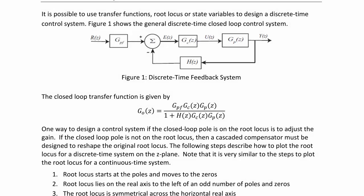It is possible to use transfer functions, root locus, or state variables to design a discrete time control system, similar to what we did for a continuous time control system. Figure 1 shows the general discrete time closed loop control system with an input R(Z), an output Y(Z), the controller GC(Z), the plant GP(Z), and the feedback transfer function H(Z).